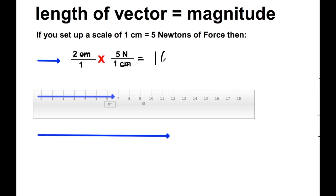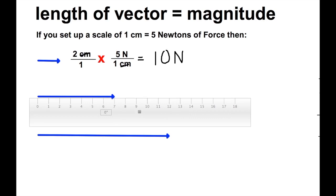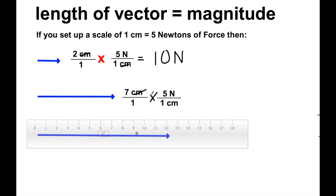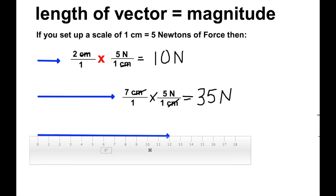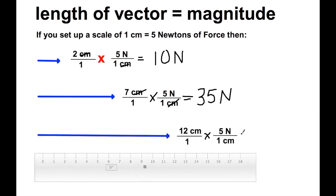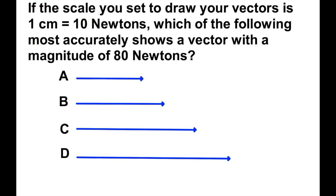If we take a look at the next vector which is 7 centimeters, then multiplying that by my scale factor would end up being a 35 Newton force. So that vector is showing 35 Newtons of force, and my final one would be showing 12 times 5, which is 60 Newtons of force. This will be very important in graphical representation of vectors.